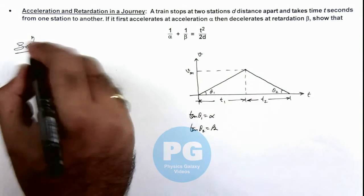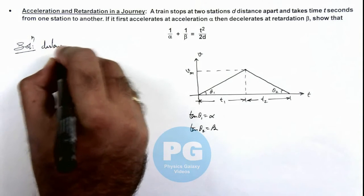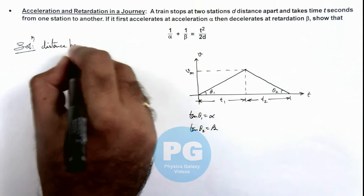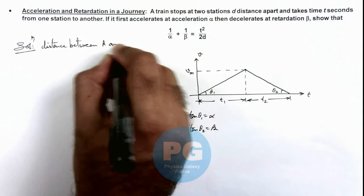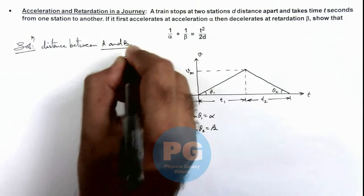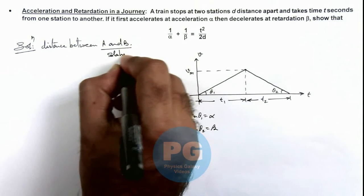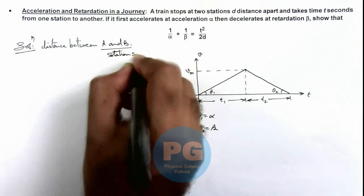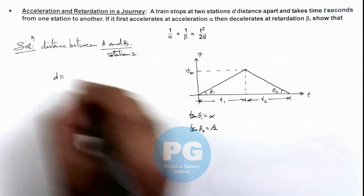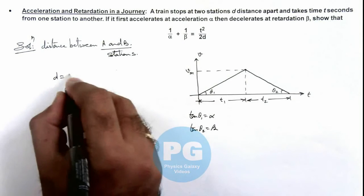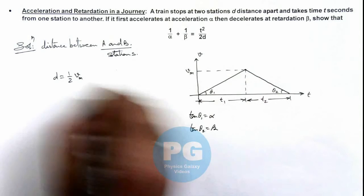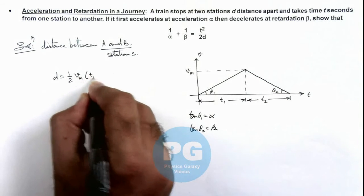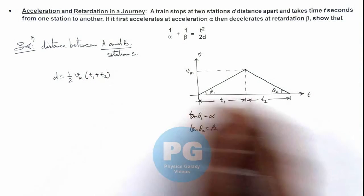We can write the distance d between stations A and B as the area of this curve, which can be written as half the altitude of this triangle, which is vₘ, multiplied by t₁ plus t₂, which is the total time of motion.